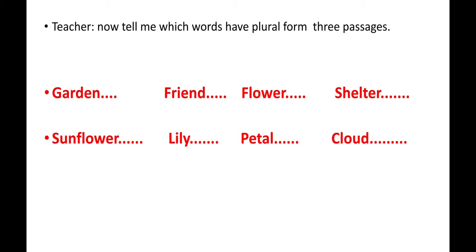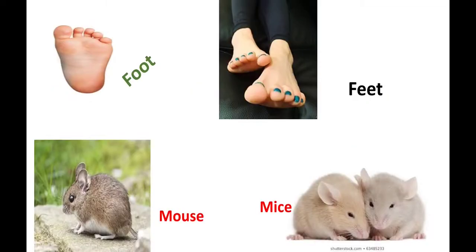Here, some words from the lesson — they are all nouns. Garden — what is the plural form? Gardens. Friend — friends. Flower — flowers. Shelter — shelters. Sunflower — sunflowers. Lily — lilies. Petal — petals. Cloud — clouds. The major share of plural forms are formed by adding S.